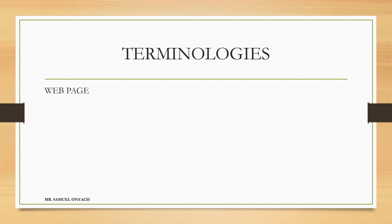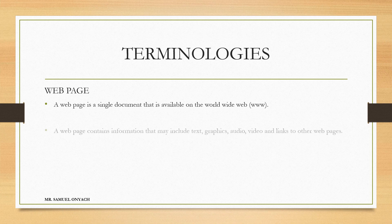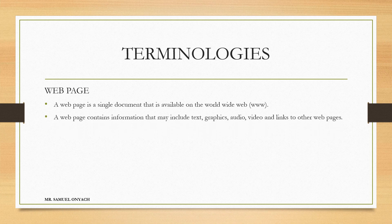A web page is a single document that is available on the World Wide Web. It contains information that may include text, graphics, audio, video, or links to other web pages — as you may have come across when browsing.